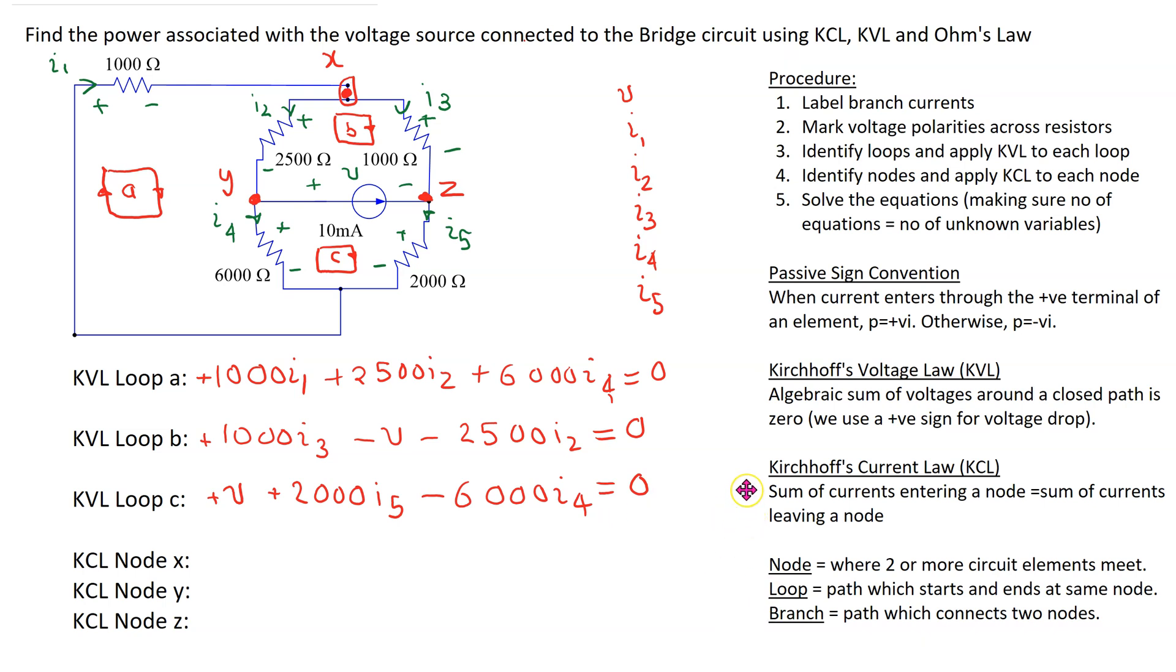Next we use Kirchhoff current law which states that the sum of currents entering a node equals sum of currents leaving a node. At node X, I1 is entering, I2 and I3 are leaving. Therefore we get I1 equals I2 plus I3.